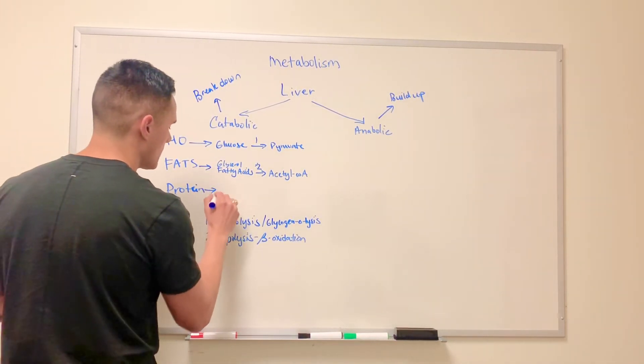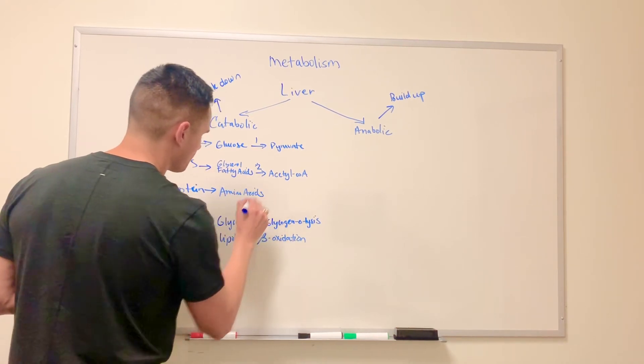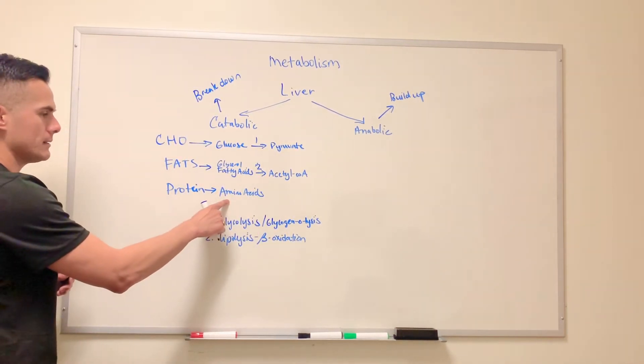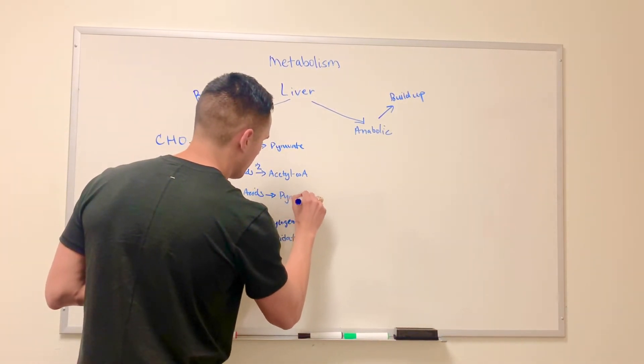Well what about proteins? So proteins are broken down into amino acids. And these amino acids can be converted to pyruvate.